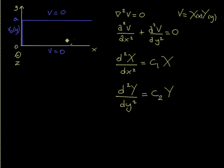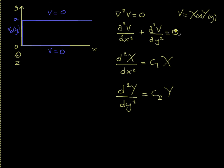For separation of variables, I'm using Cartesian coordinates for this particular problem. I will write the potential as uppercase X, which is a function only of x, times uppercase Y, which is a function of y. I'm skipping z because my solution is entirely independent of z. Writing the potential in this way transforms the Laplacian of the potential equal zero into two ordinary differential equations.